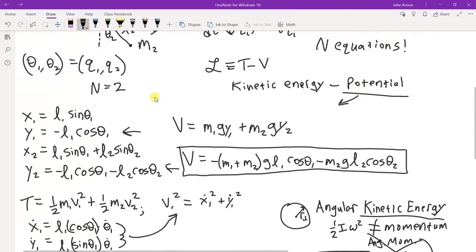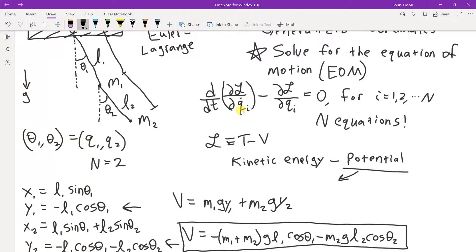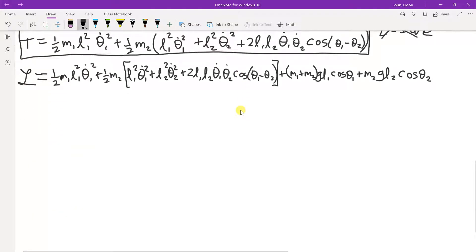All right, so the first thing we want to do is take the derivative of the Lagrangian with respect to the q dots. That's the time derivative. And so when we do that, we'll get, so DL D theta dot 1, that's a terrible theta, sorry. I'm still getting used to this drawing board. Theta 1 dot equals M1 L1 squared theta 1 dot plus M2 L1 squared theta 1 dot plus M2 L1 L2 theta dot 2 cosine theta 1 minus theta 2.